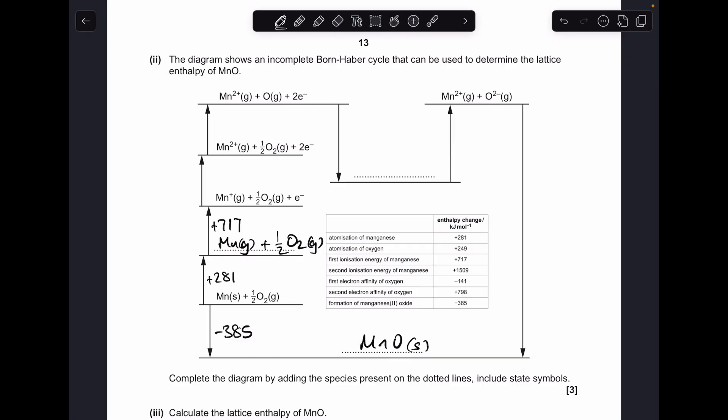Next arrow is going from Mn⁺ gas with one electron, to Mn²⁺ gas with two electrons. So that's the second ionisation energy for your manganese, so it's +1509.